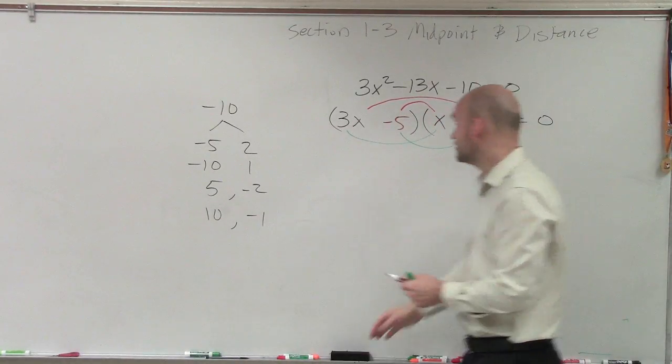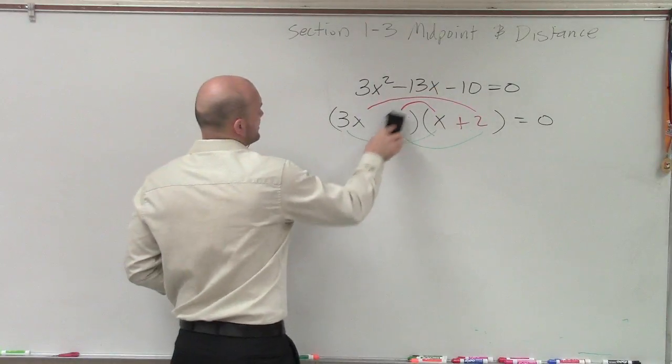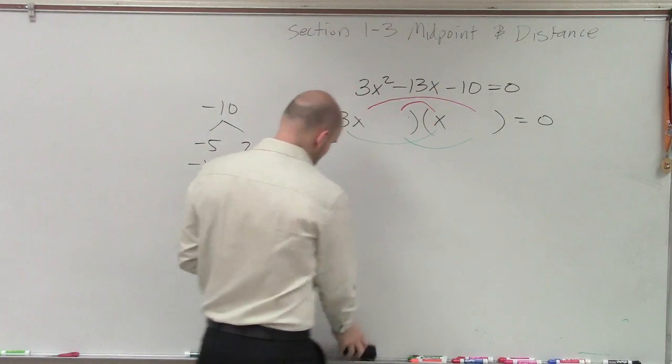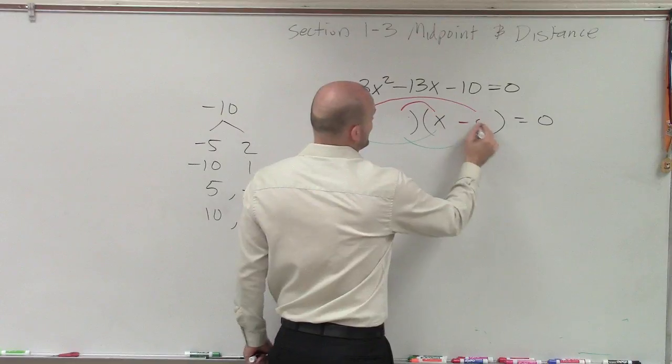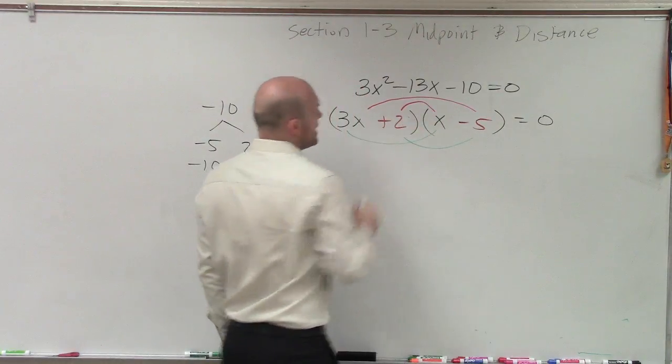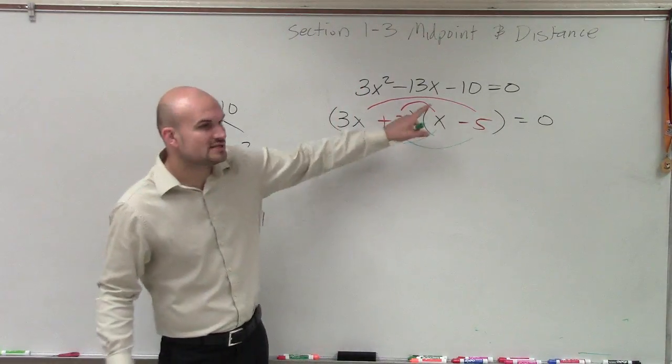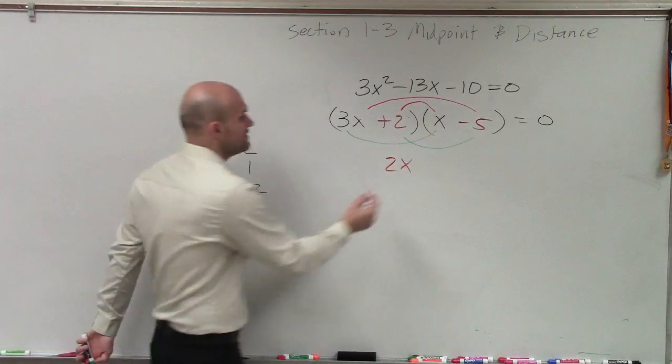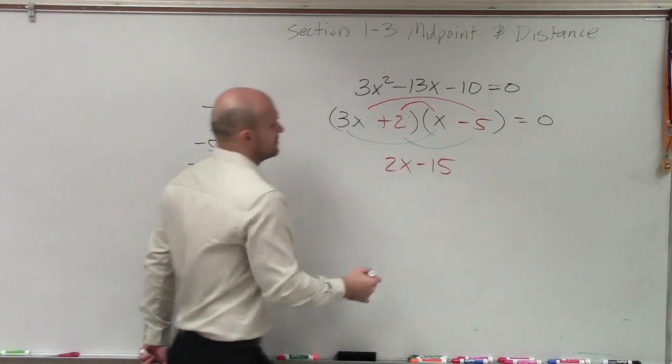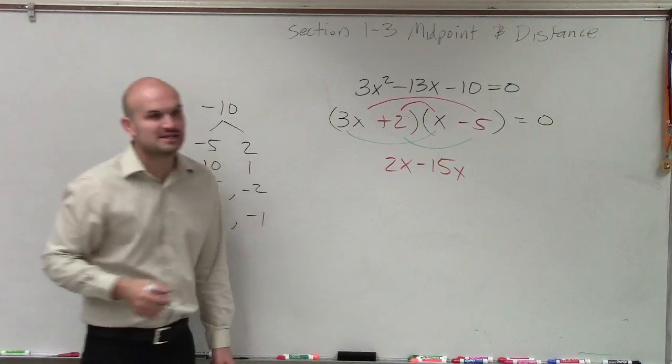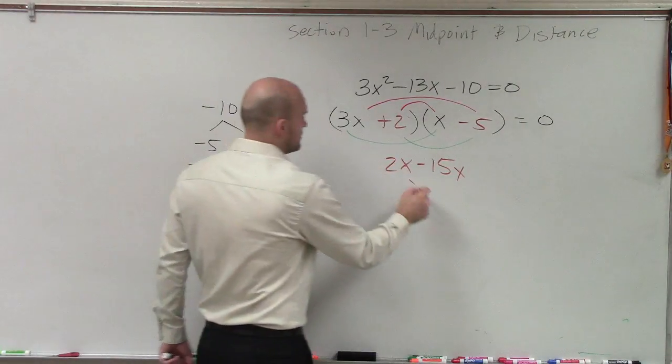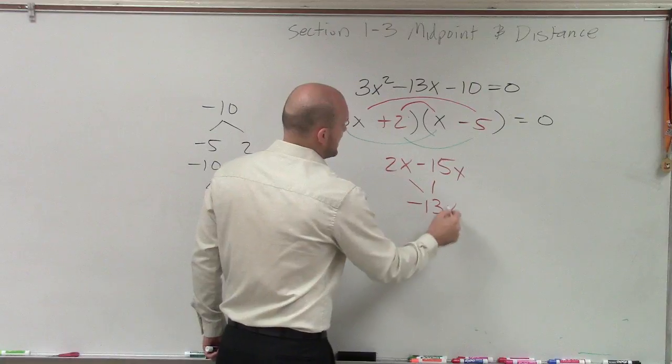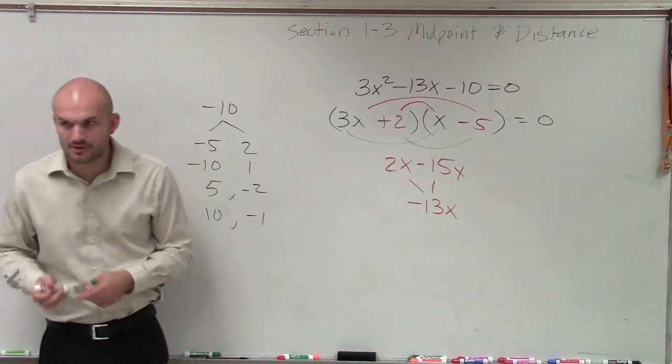But then we could also rewrite those. Hey, look at this, I already have my first try, I already got the right answer. Then I could rewrite that as what about positive 2, negative 5? Because 2 times x is 2x, 3x times negative 5 is a negative 15x, and what is 2x minus 15x? Negative 13x. Is that my middle term? Yes.